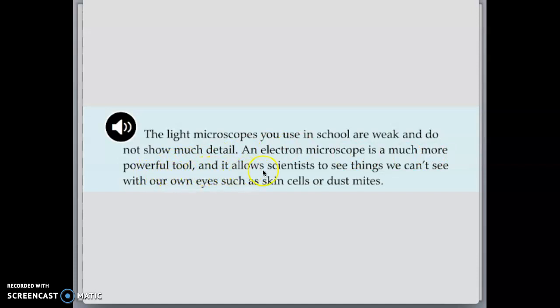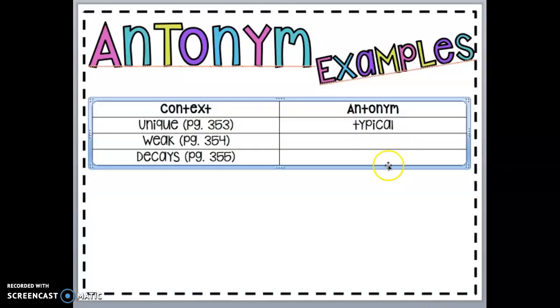Let's take a look at the following sentence because remember antonyms can be in the sentence before, the sentence with the word, or after the sentence that has the word. An electron microscope is much more powerful tool and it allows scientists to see things we cannot see with our own eyes such as skin cells or dust mites. Did anybody find the opposite of weak? Awesome. You guys are correct. The opposite of weak is powerful. Let's put it into our chart.